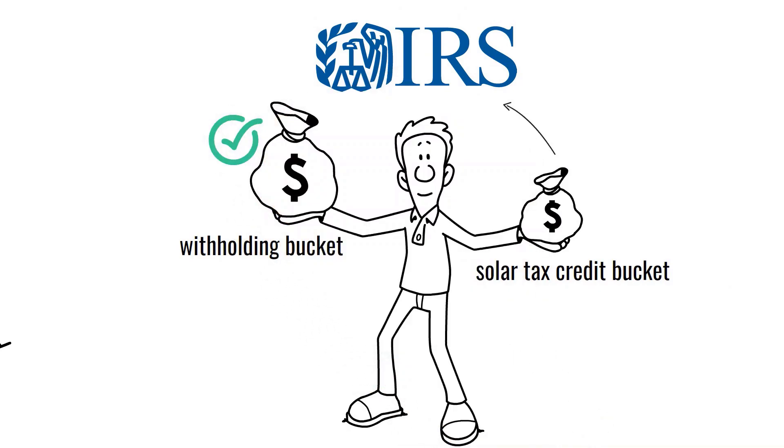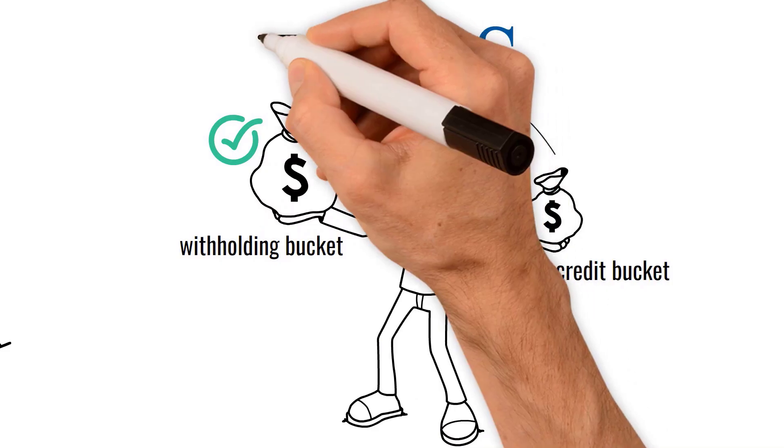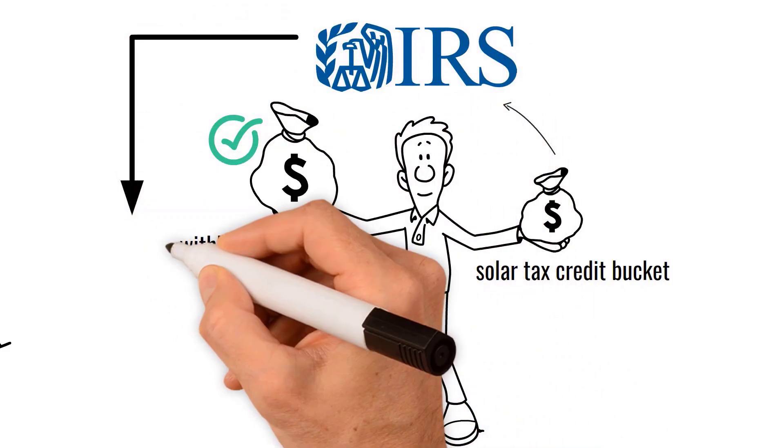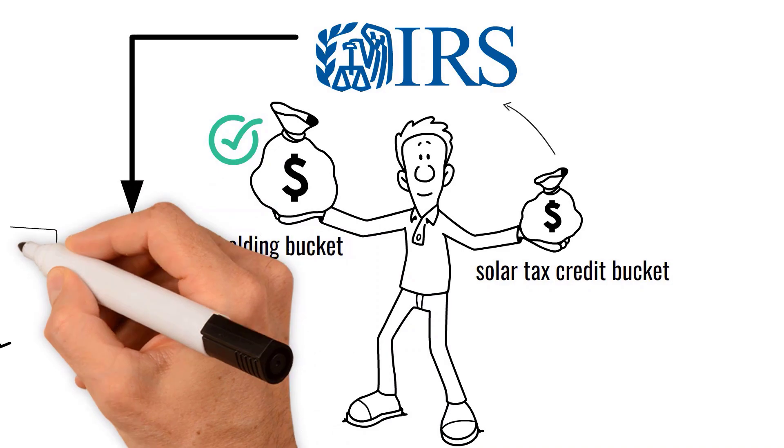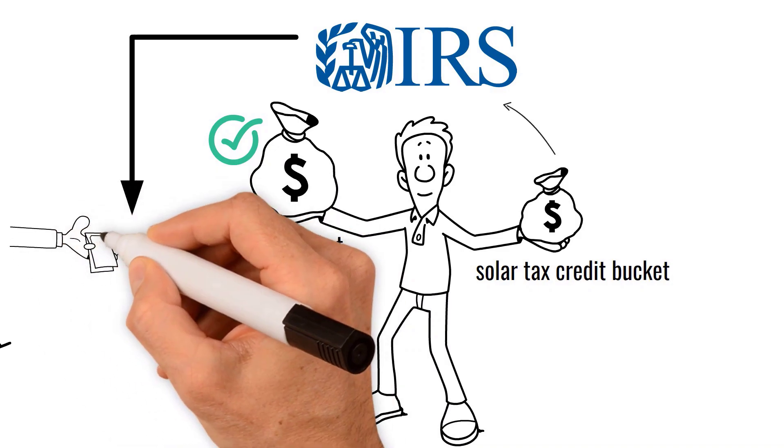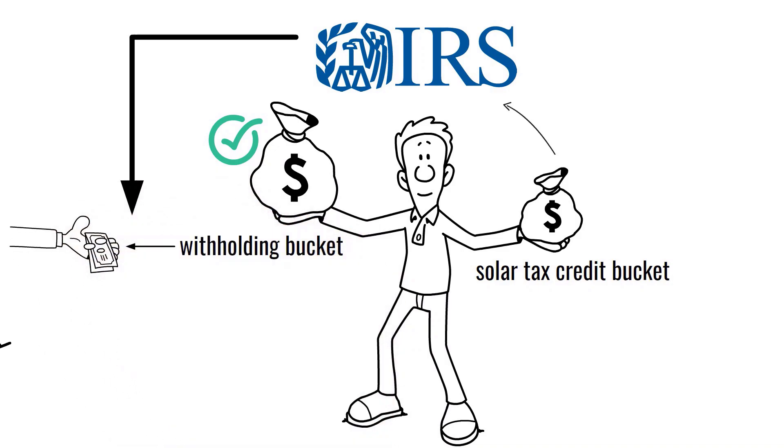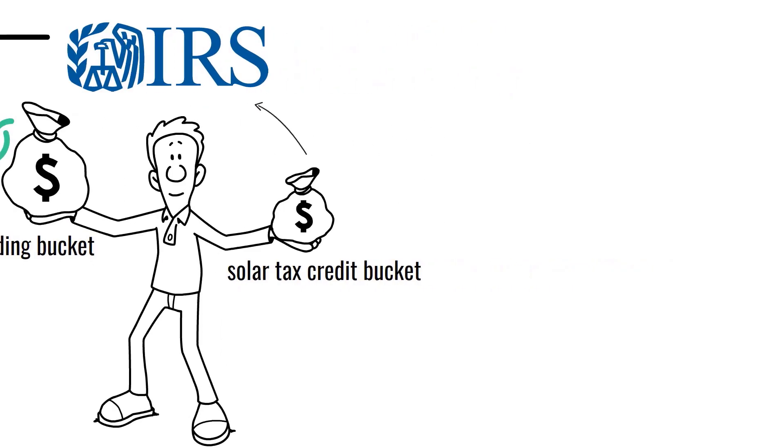The withholding bucket remains full of all the money he withheld throughout the year. If the IRS needs additional funds beyond the solar tax credit bucket, they'll take it from Bob's withholding bucket and give him the rest back as a refund.